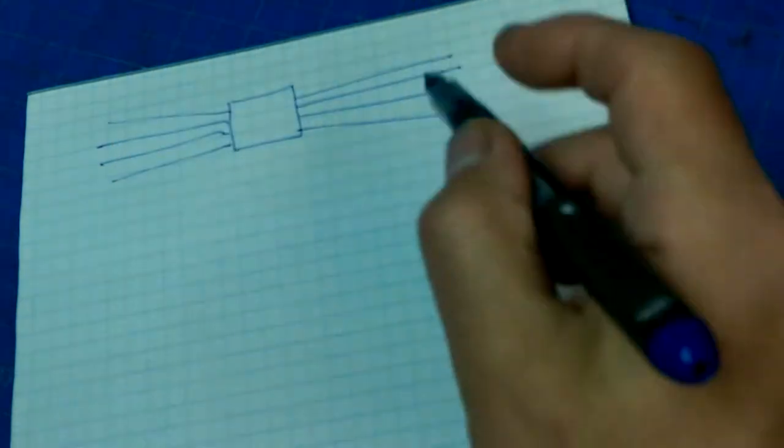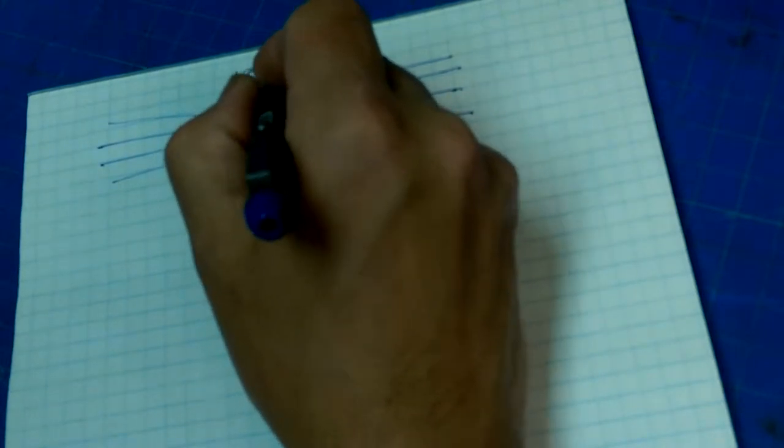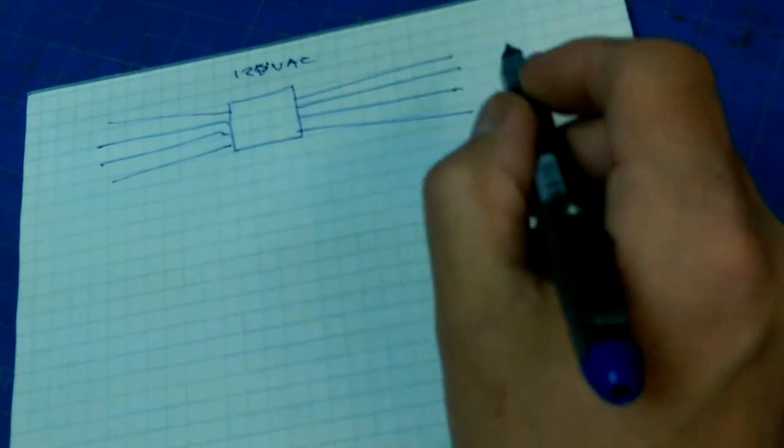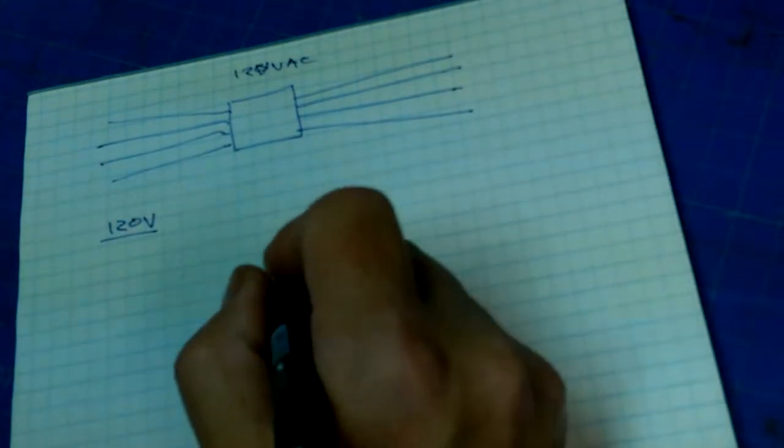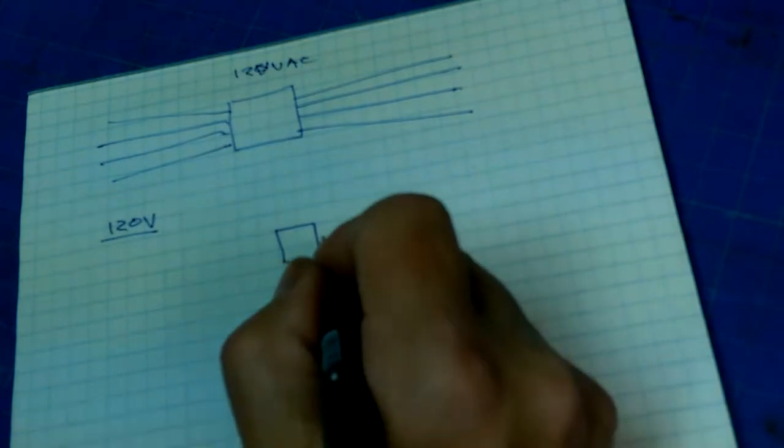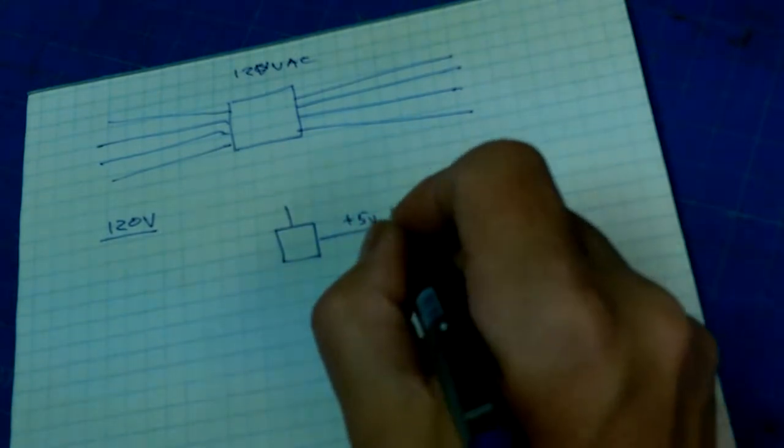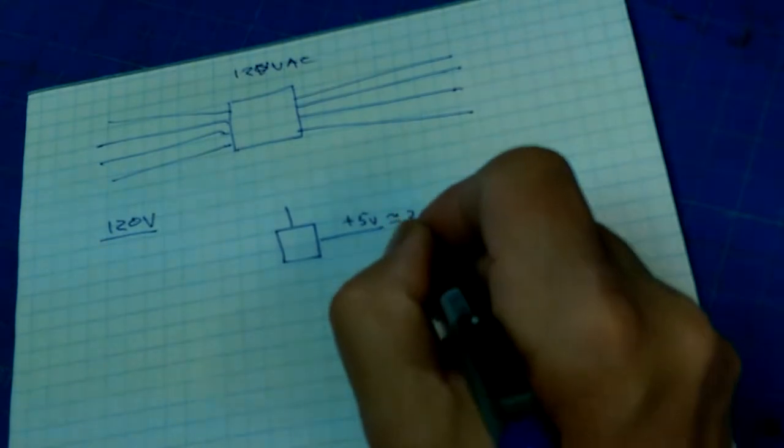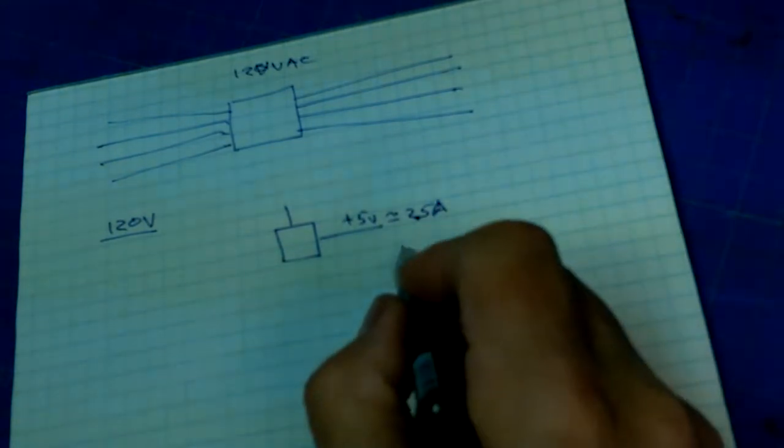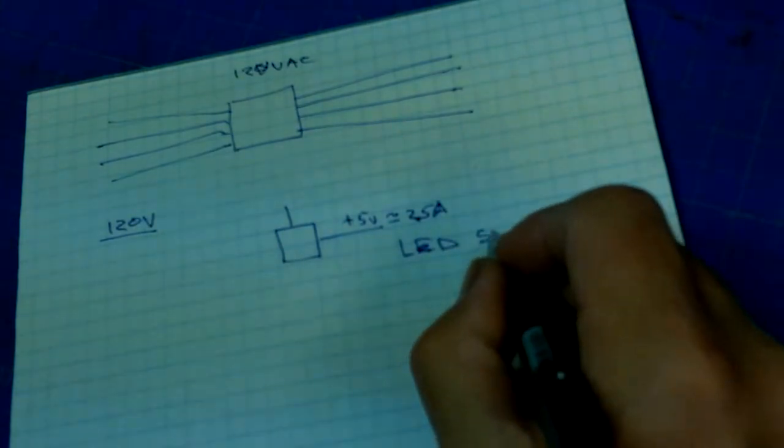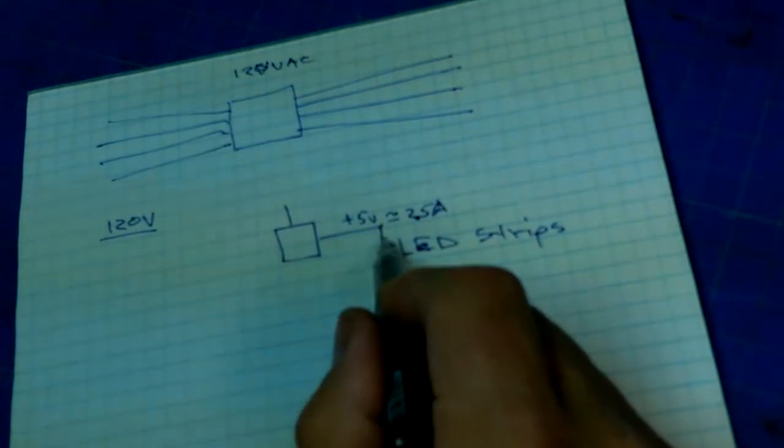So somehow I've got this being powered by line voltage, 120 volts AC nominal. I've got 120 volts coming into a light box, and off of that I need to do two things. I need to convert power into a plus 5 volt rail that can support something like 2.5 amps of current in order to power the LED strips. That is one requirement.